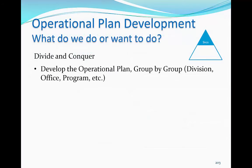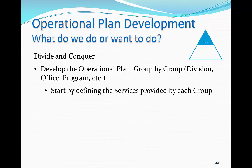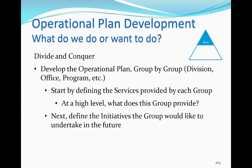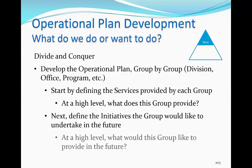First, divide and conquer. Develop the operational plan group by group. Start by defining the services provided by each group. At a high level, what does this group provide to their constituents, the organization, or their partners? Next, define the initiatives the group would like to undertake in the future. Again, at a high level, what would this group like to provide in the future?